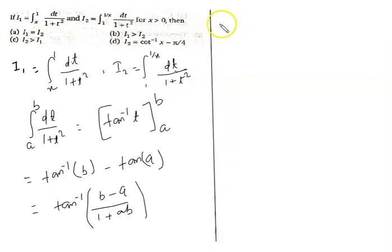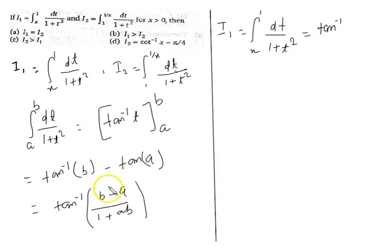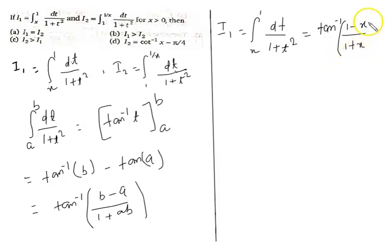Now I am going to find I1. I1 has the limit from x to 1 of dt by 1 plus t squared. Using the formula, this becomes tan inverse of (b minus a) over (1 plus ab), which gives tan inverse of (1 minus x) divided by (1 plus x).